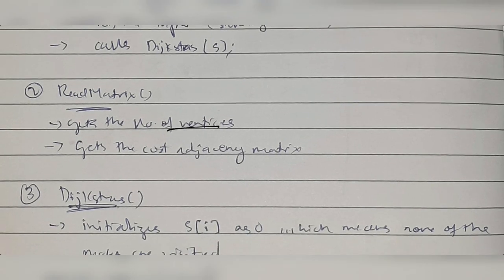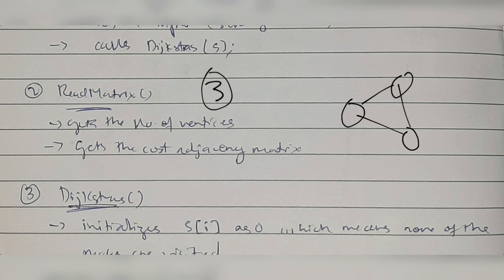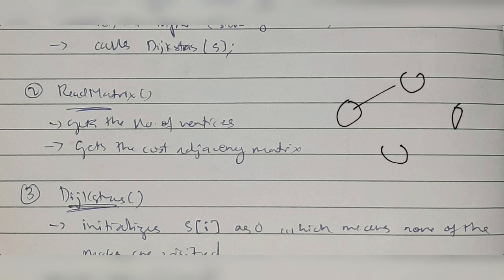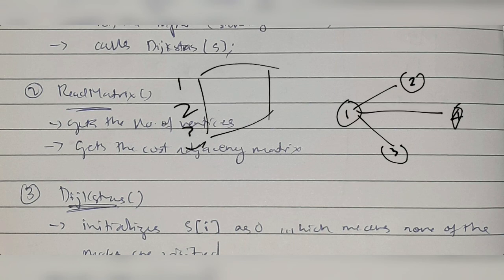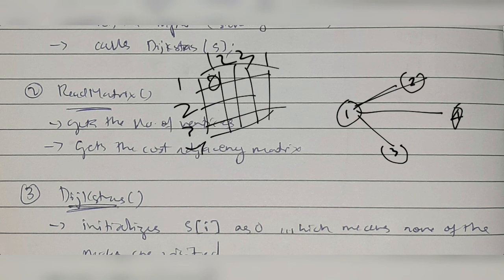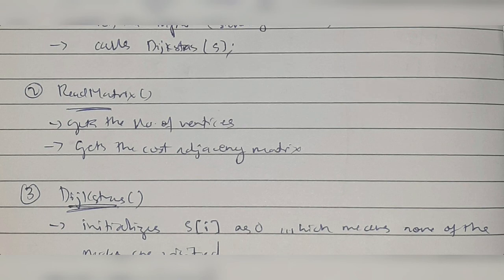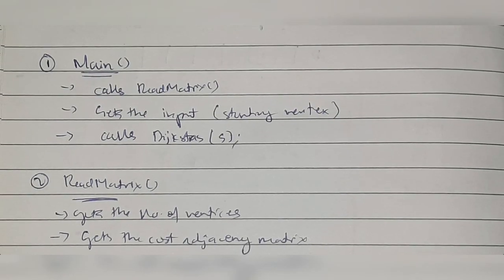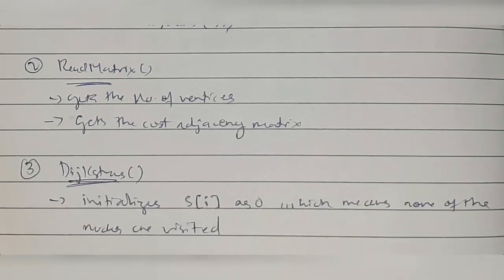In readMatrix, we get the number of vertices — for example, if there are three vertices, the number of vertices is three — and we get the cost adjacency matrix. The cost adjacency matrix has vertices in both rows and columns. For each cell, it stores the weight of the edge. It's a directed graph, so the weight from vertex 1 to 2 is not the same as from 2 to 1. In that way, we initialize the adjacency matrix.